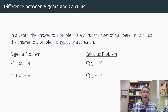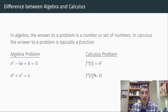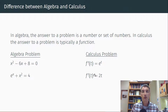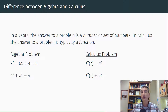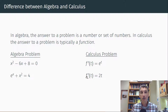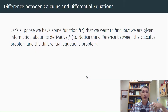There are harder algebra problems, like e to the x plus x squared equals 4 — there should be a number x that solves it, but it's more complicated to find. A calculus problem could be f prime of t equals 2t, and a solution to that might be t squared, because the derivative of t squared is 2t. So that's a calculus problem versus an algebra problem. What's the difference, then, between calculus and differential equations?